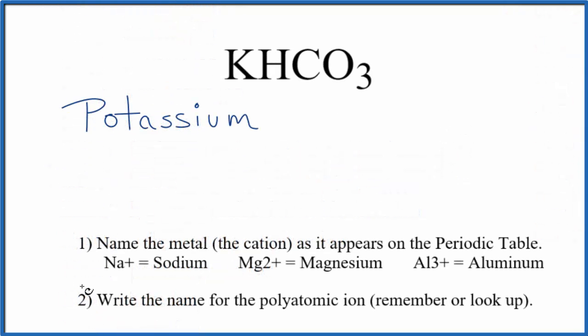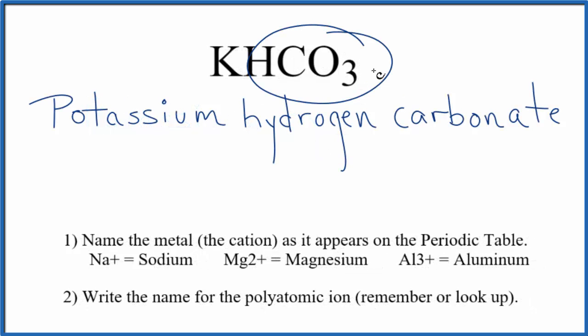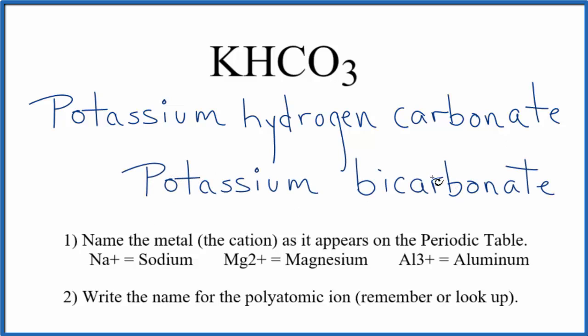So now we can write the name for the polyatomic ion, this hydrogen carbonate. So potassium hydrogen carbonate. And we said this hydrogen carbonate ion here, it's also called the bicarbonate ion. So we can call this potassium bicarbonate as well.